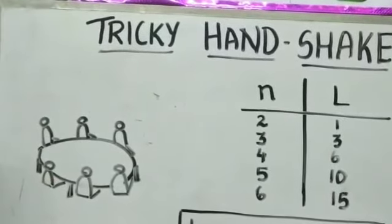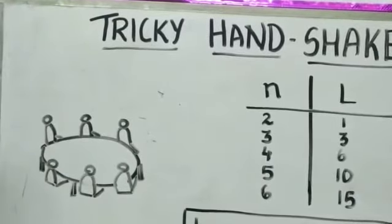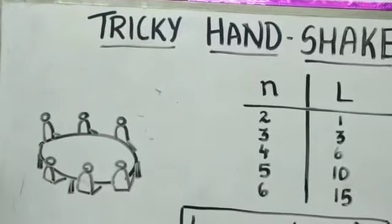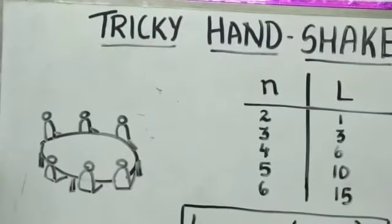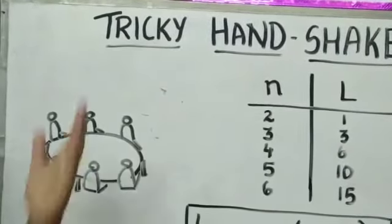I said that if some people, n number of people are sitting around a table and they are asked to give shake hands to each other, then how many shake hands would be there in total? It is the same concept that we saw here.